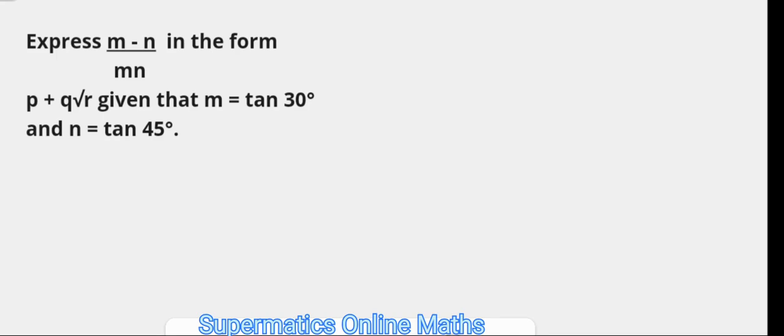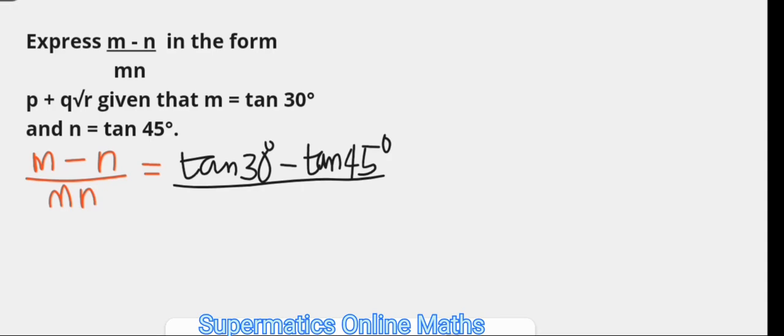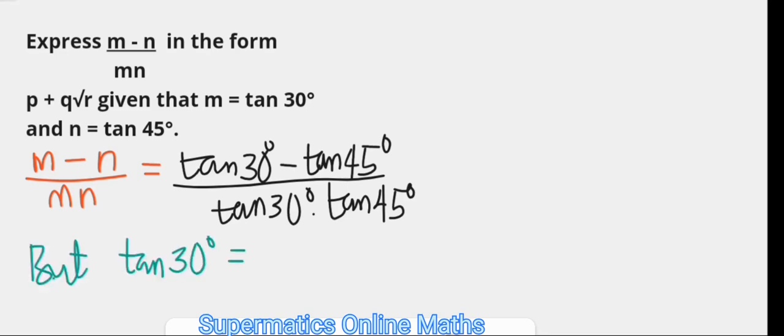So m minus n over the product of m and n is going to be tan 30 degrees minus tan 45 degrees over the product of tan 30 and tan 45. Since the answer is to be in radical form, tan 30 degrees is 1 over root 3 and tan 45 degrees is 1. Therefore, m minus n over the product of m n becomes 1 over root 3 minus 1, over the product of 1 over root 3 and 1.